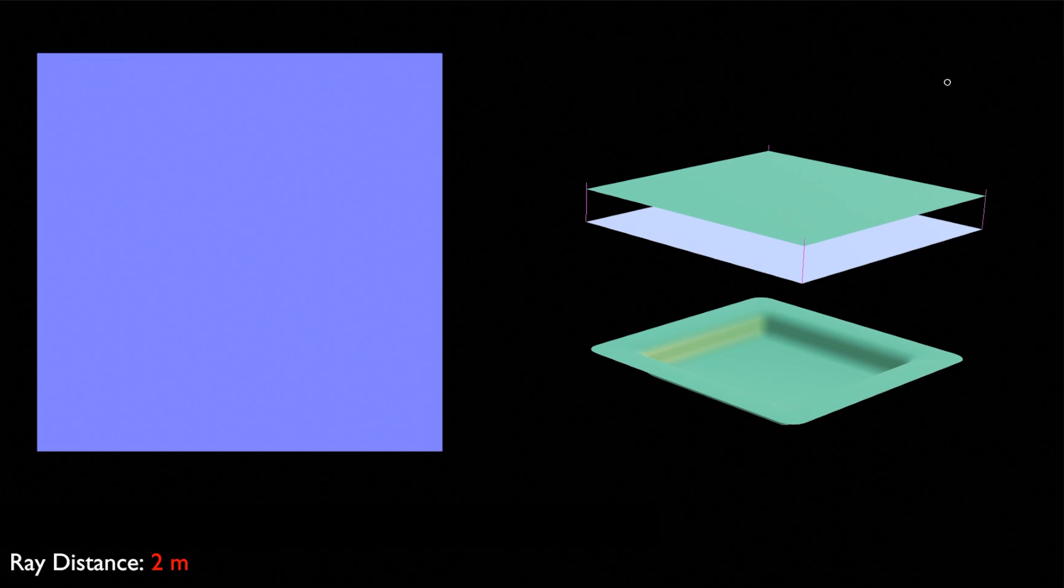Now with a ray distance set to 2 meters, rays intersect with a flat plane above the low poly model and stop traveling inward after that. This shows that once a ray hits geometry it's not going to try to find more geometry.